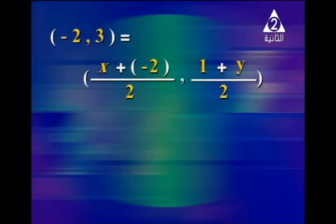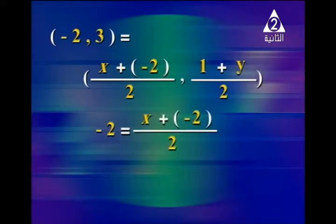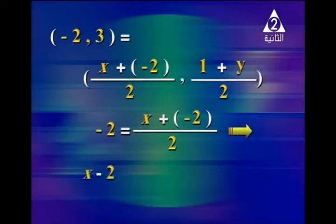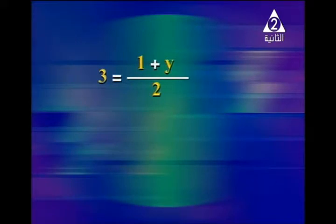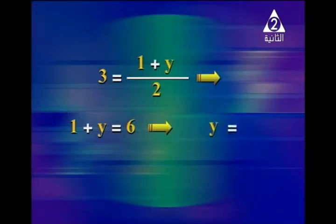Since the two ordered pairs are equal, the x-coordinates are equal: negative 2 equals (x plus negative 2) over 2. By cross multiplication, x minus 2 equals negative 4, so x equals negative 2. For the y-coordinate, 3 equals (1 plus y) over 2, giving 1 plus y equals 6, so y equals 5. Therefore x equals negative 2 and y equals 5.